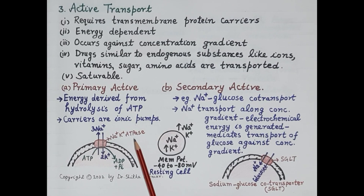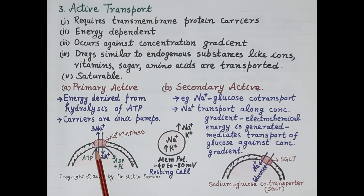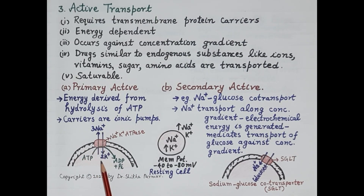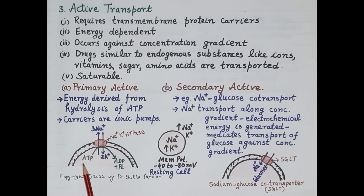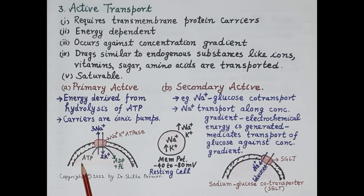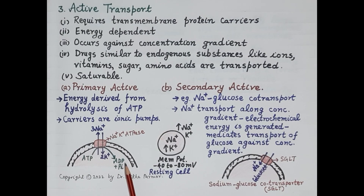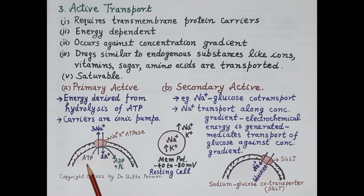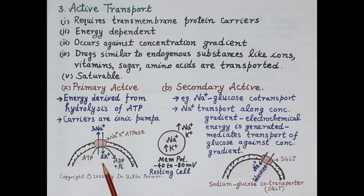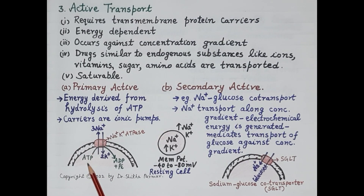The sodium-potassium ATPase contains one ATP binding site on its cytoplasmic surface. This transportation is driven by the hydrolysis of adenosine triphosphate — ATP is hydrolyzed to produce ADP, releasing energy. The energy released by hydrolysis of ATP is utilized by the pump for transporting sodium outside the cell and potassium inside the cell. So primary active transport requires energy obtained by hydrolysis of ATP.